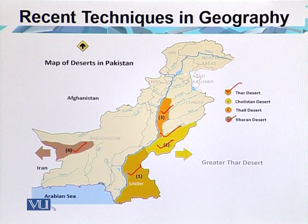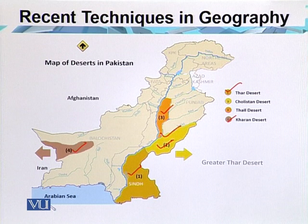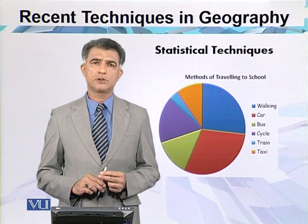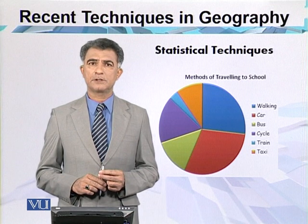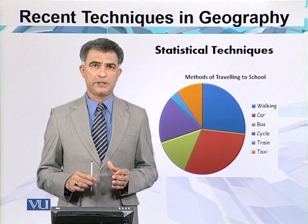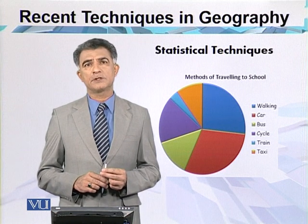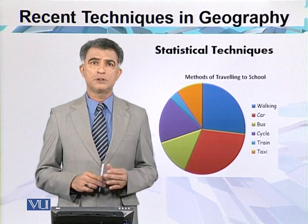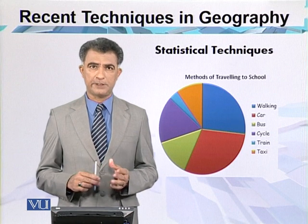We can interpret the data in different graphs, make charts, and draw maps of the given data. With the help of statistical techniques, we can not only draw maps but also create pi diagrams, and the data can be presented in different ways. For example, the number of school-going children can be categorized by mode of transport — some go by car, some by public transport, and some by walk.